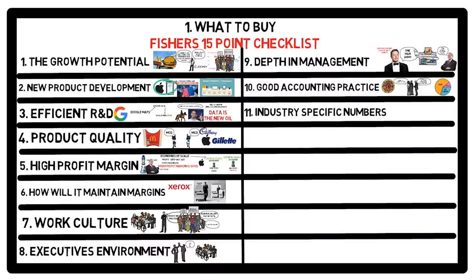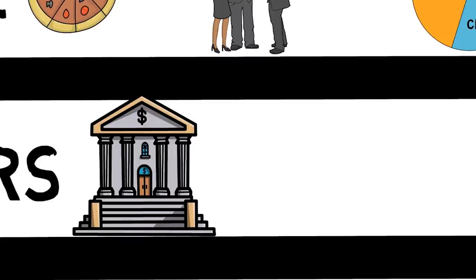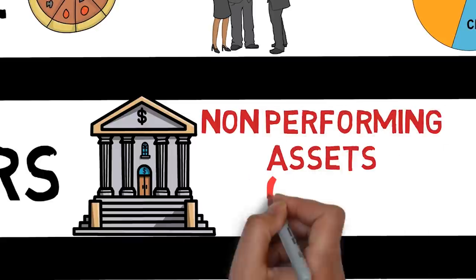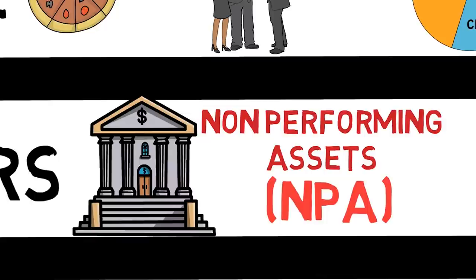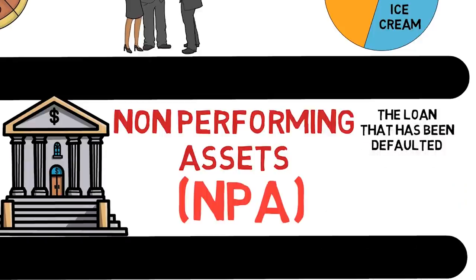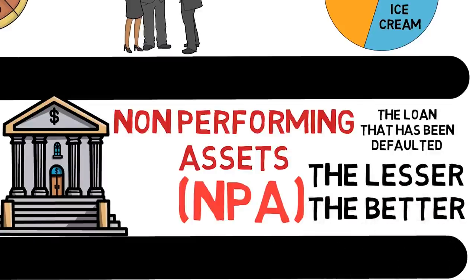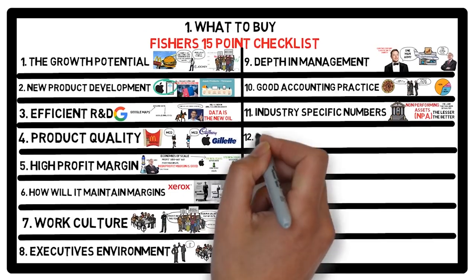Number 11: Every type of business has a peculiarity and a particular financial number that can tell you about the strength of the business. For example, in banking business, important metric to see is non-performing assets, called NPA, which means bad loans, which means how much percentage of loans given by the bank have been defaulted and are not being paid. The lesser the NPA number, the better it is for banks. If there is an important business-related metric, you must just look at it.